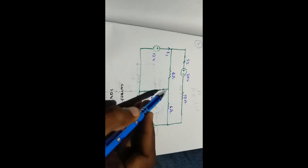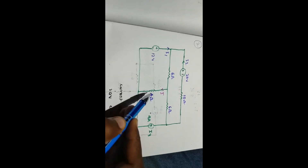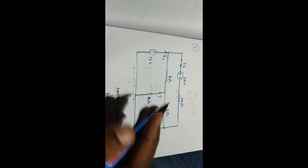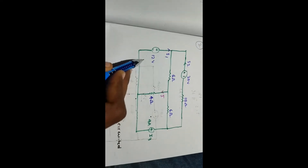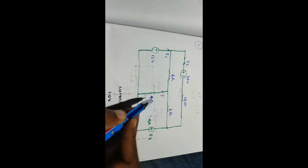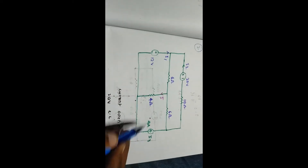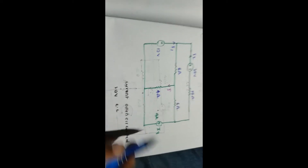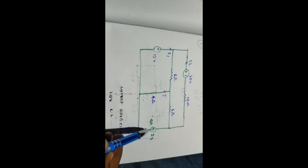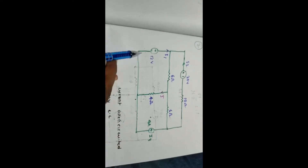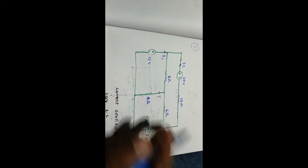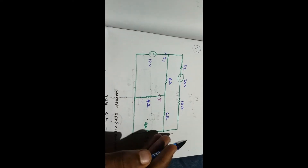We find the current through the 4 ohm resistor for each source individually. For the first source, which is 12 volts, we consider it active. If you consider the source, you deactivate the remaining sources.